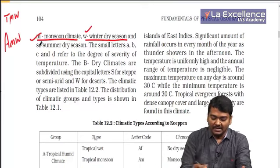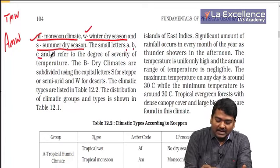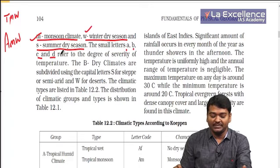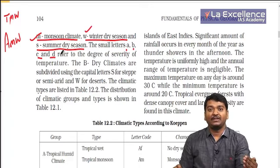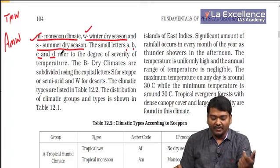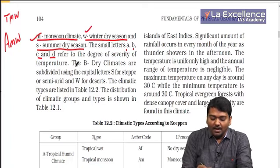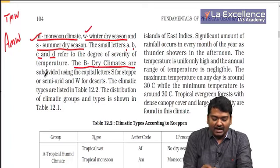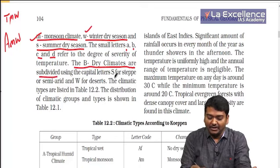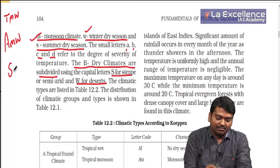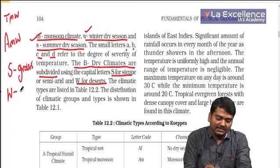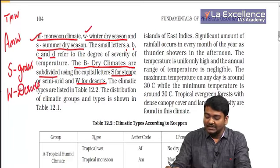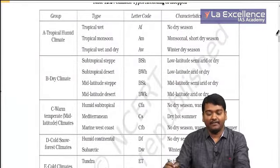The small letters A, B, C, and D talk about the degree of severity of temperature — higher temperature gets a different letter. The B dry climates are subdivided into grasslands and deserts. S means steppe, meaning grasslands. W means deserts.